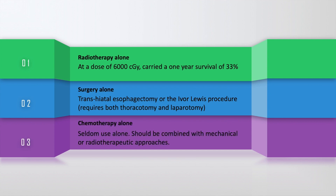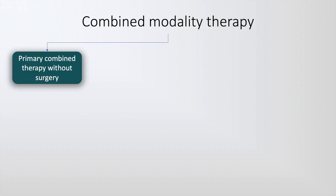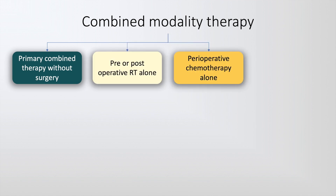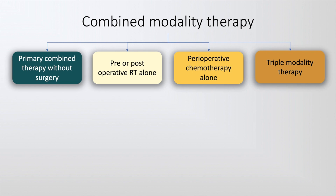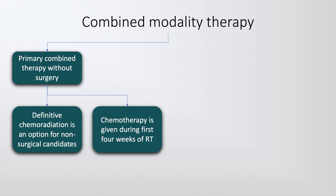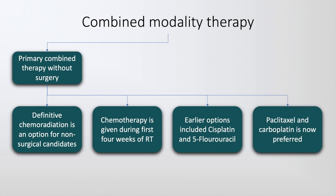Chemotherapy alone is used infrequently because of poor survival rate. At present, the gold standard for management of carcinoma of the esophagus is combined modality therapy, classified into primary combined therapy without surgery, pre- or post-operative radiotherapy alone, perioperative chemotherapy alone, and triple modality therapy. The primary combined therapy without surgery consists of definitive chemoradiation, an option for non-surgical candidates, with chemotherapy given during the first 4 weeks of radiotherapy. Earlier options included cisplatin and 5-fluorouracil; the preferred combination is now paclitaxel and carboplatin.